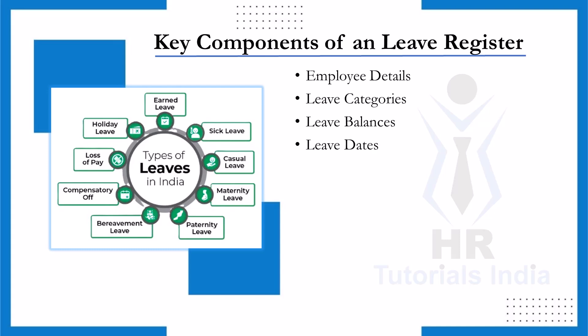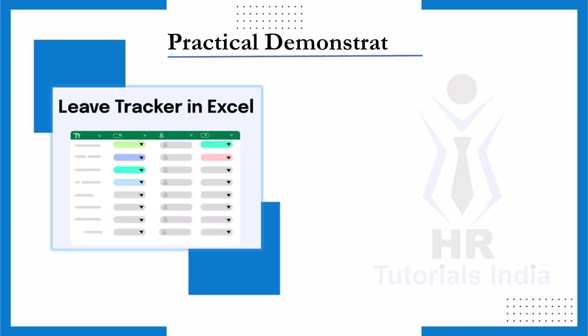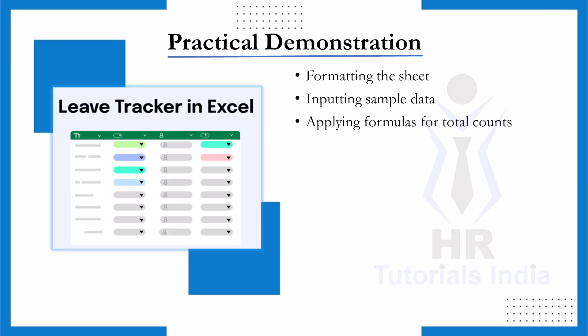Leave dates: Record the exact dates when leaves are taken, making it easier to analyze trends and verify records during audits. Approval status: Include a column to note whether the leave is approved or pending, which adds accountability and keeps the register up to date. In the practical demonstration, we will cover formatting the Excel sheet, inputting sample data, applying formulas for total counts, and understanding tips for ensuring accuracy and efficiency. So let's get into the practical part of this video.